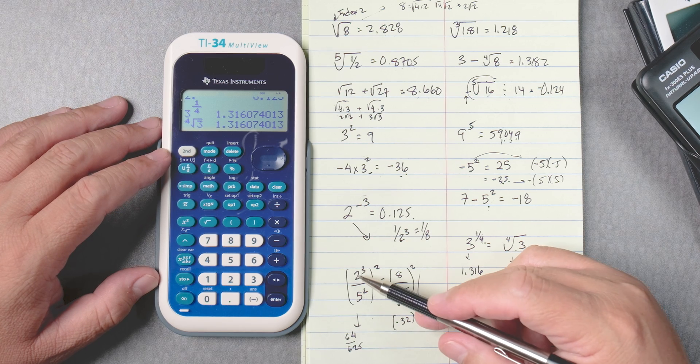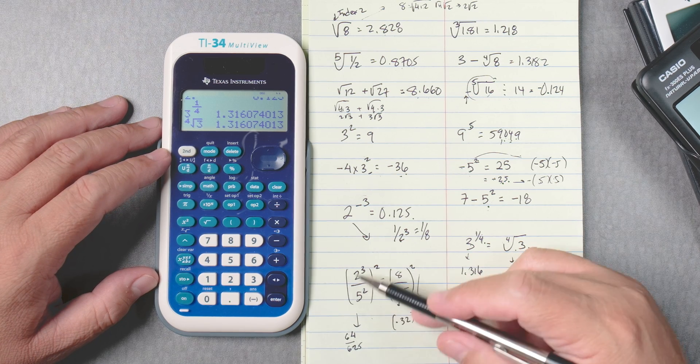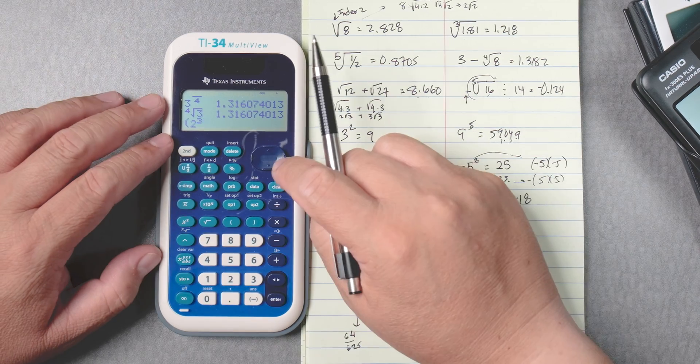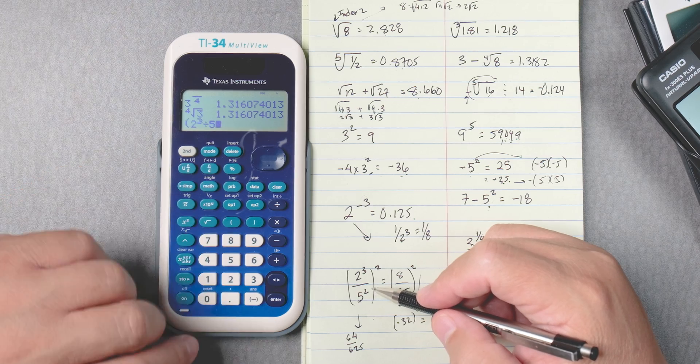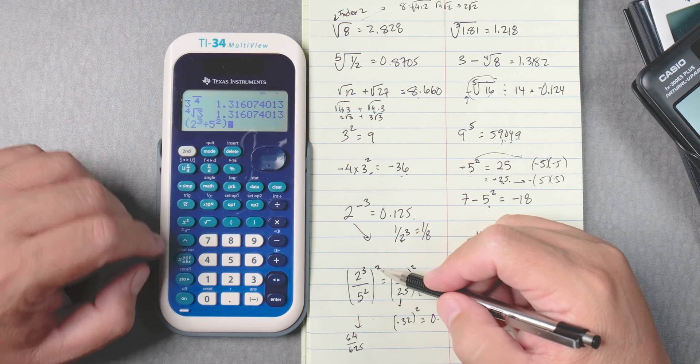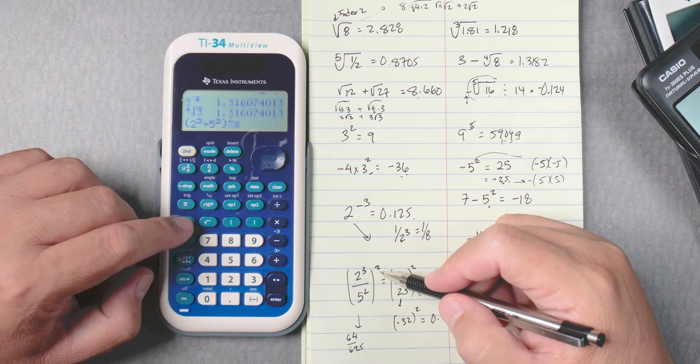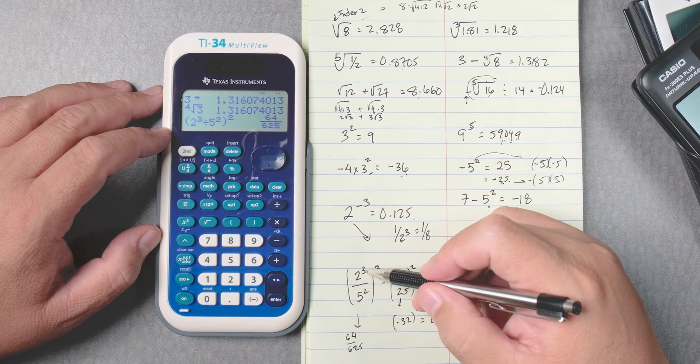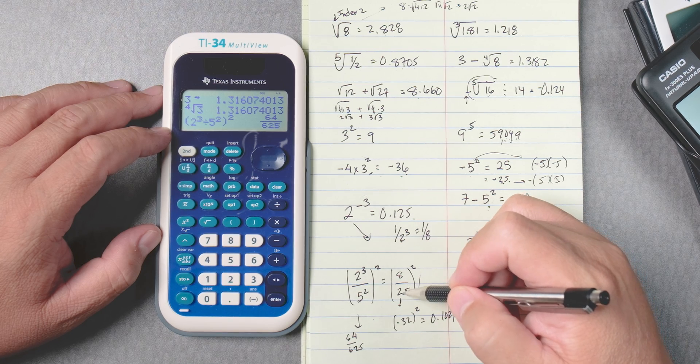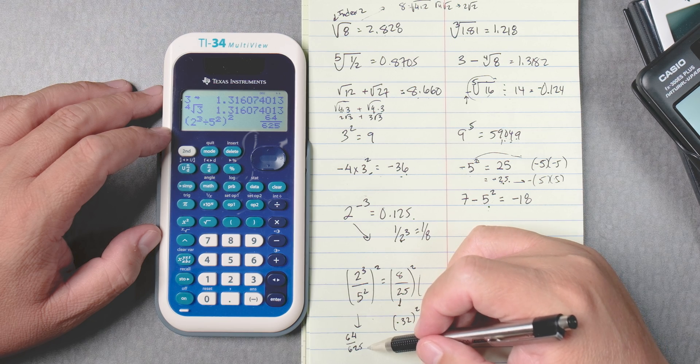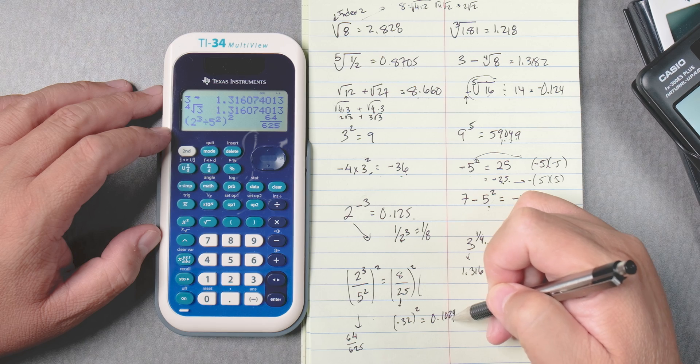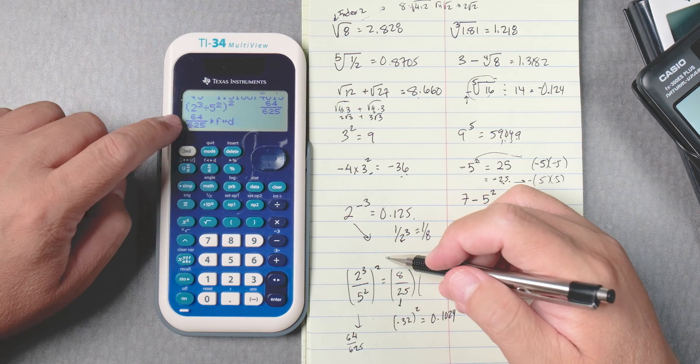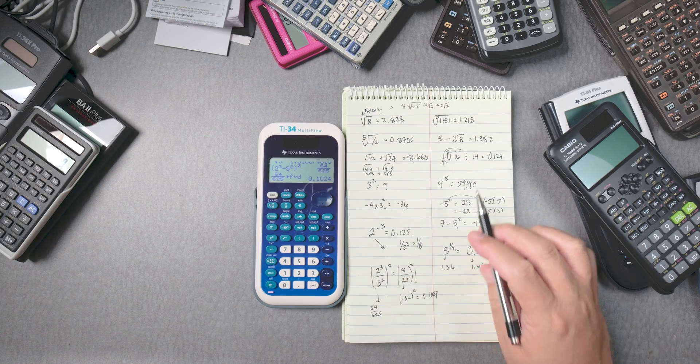Next one, over here, this is 2 to the third, divided by 5 squared to the power of 2. So we're going to put parentheses, 2 to the power of 3. Here, we've got to move it down to divide, 5 squared, close it, and then I'm going to square again. You can use the caret key if you like, but I'm going to use squared here, enter. It's going to give 64 over 625. Why? 2 to the third is 8, 5 squared is 25, 8 squared is 64, 25 squared is 625, but I want the answer, right? I want 0.1024. We do that again, we press 2nd, n over d. Take that fraction and change it to a decimal. Boom. There it is.